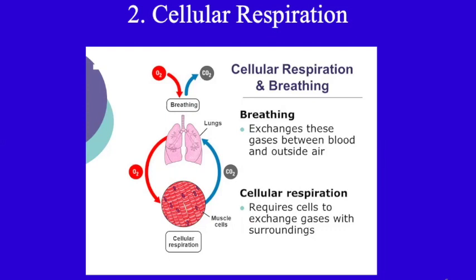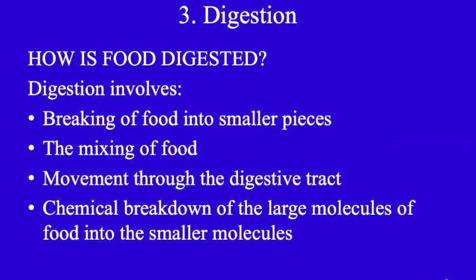During cellular respiration, oxidation of glucose takes place at the cellular level. In the cell, respiration is taking place, and breathing is a part of respiration because breathing supplies oxygen and releases carbon dioxide. Now, my next topic is digestion — how is food digested?